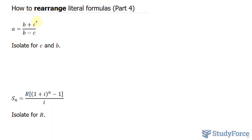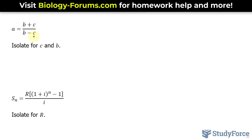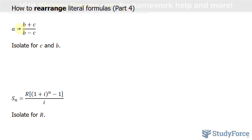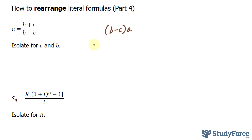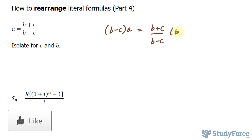Starting with c, our target is found in two places. So what we want to do is first get rid of this fraction, and we can do that by multiplying each term of this equation by the common denominator, that being b minus c. So I'll multiply the right side by b minus c and the left side by b minus c. I end up with b minus c in brackets times a. Make sure that you put b minus c in brackets, otherwise it's incorrect. This is equal to b plus c over b minus c times b minus c.